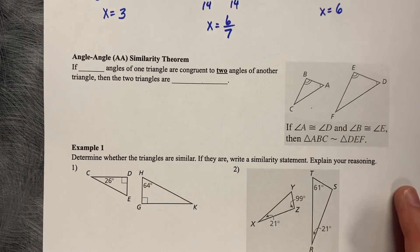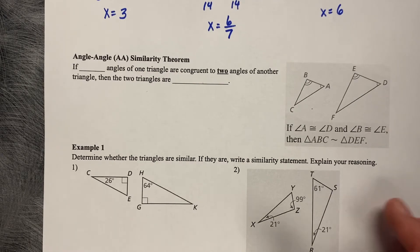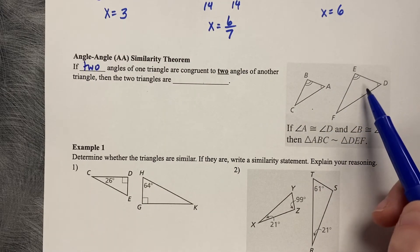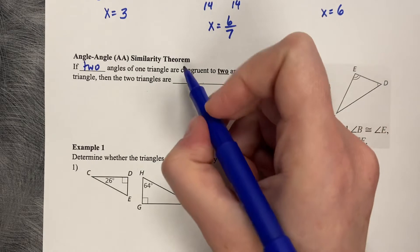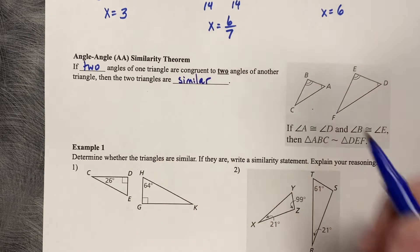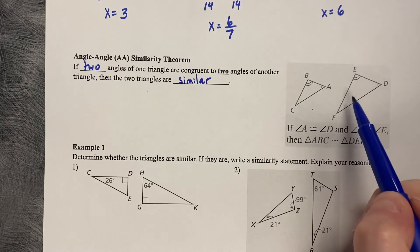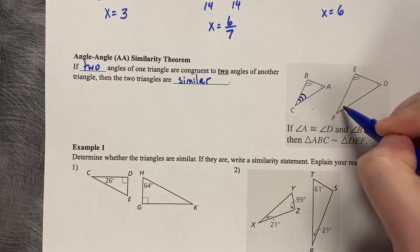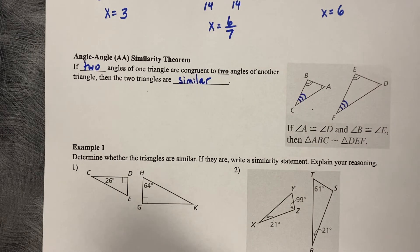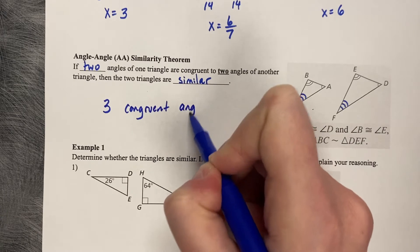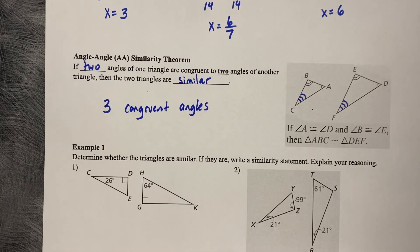So the similarity definition, or the similarity theorem we're learning today, is if two angles of one triangle are congruent to two angles of another triangle, then the triangles are similar. That's key. And something to note is that if you have two angles similar to each other, that's going to conclude, it's called the third angle theorem, it's going to conclude that that third angle is also congruent to each other. So you're looking for three congruent angles to say that two triangles are similar, because all three really are going to need to be congruent.